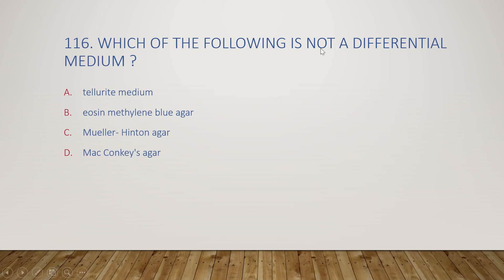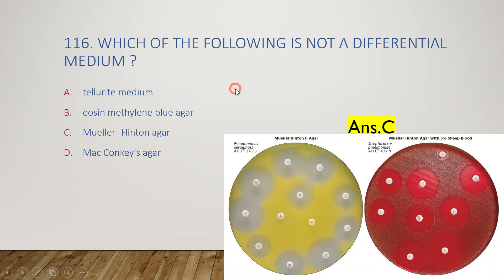Next question: which of the following is NOT a differential medium — tellurite medium, eosin methylene blue agar, Muller-Hinton agar, or MacConkey's agar? The answer is option C, Muller-Hinton agar is not a differential medium. This is a picture of the Muller-Hinton agar plate, also available with 5% sheep blood, and it is used for antibiotic sensitivity testing.